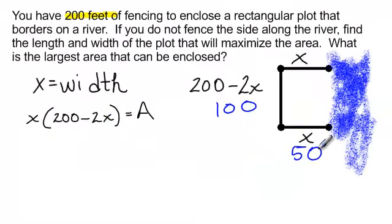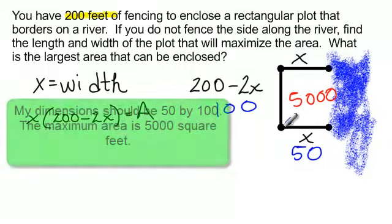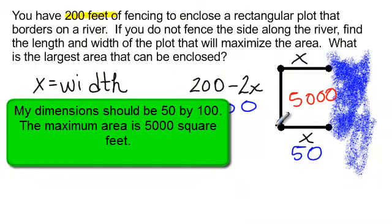So my x is 50, and when I plug in 50 for this side, I will get 100. And 5,000 was my y, or you could say 100 times 50 and get 5,000. So the area is 5,000. The dimensions should be 50 by 100, and the largest area that can be enclosed is 5,000.